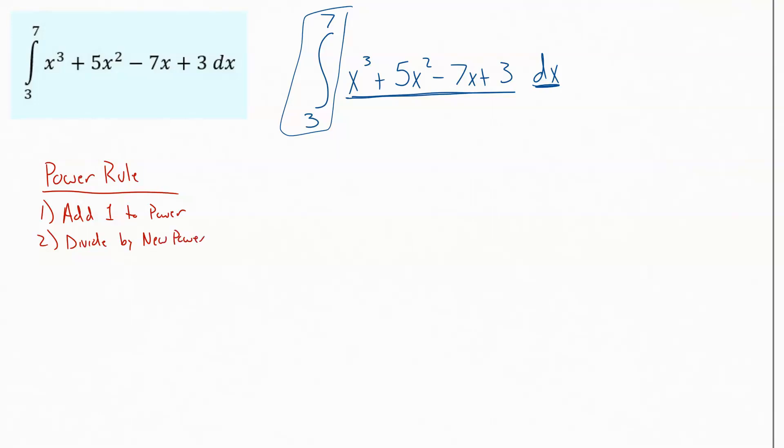So we go apply that here. Working our way through this one piece at a time, break it up into smaller bite-sized problems by the pluses and the minuses. So I'm going to add 1 to the power there, that's going to get me x to the 4th, and then I divide by that new power, so divide by 4.